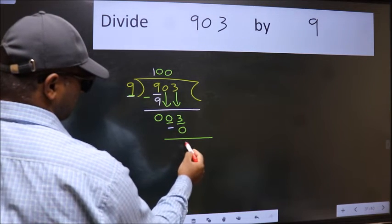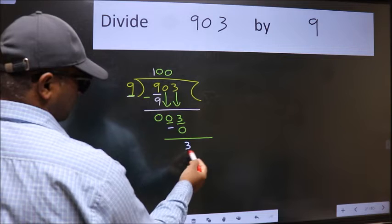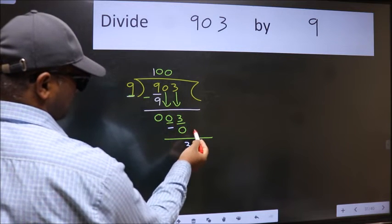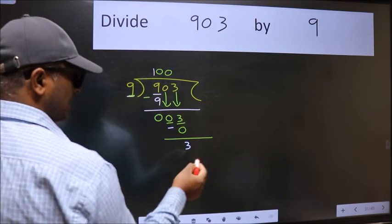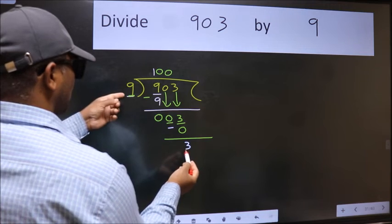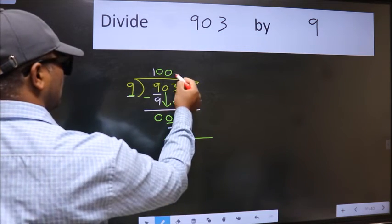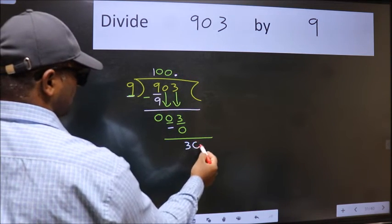Now we subtract we get 3. Over here we did not bring any number down. And 3 is smaller than 9. So now we can put dot and take 0.